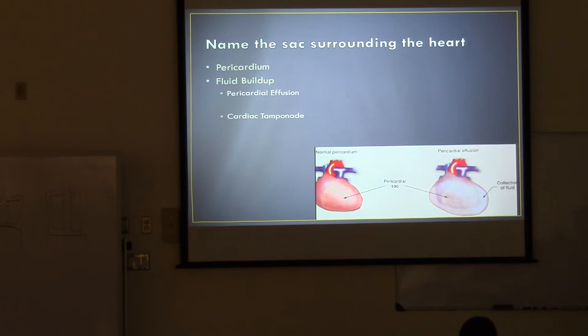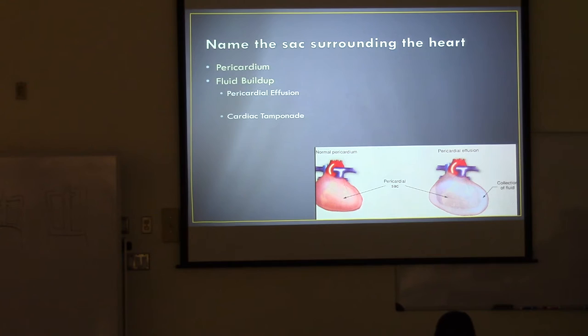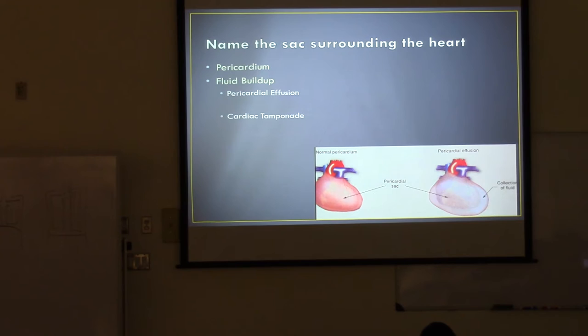Fluid pressing on the heart prevents adequate blood flow — that's cardiac tamponade. The pericardial effusion is referring to the fluid, and the fact that you have very low cardiac output or very low blood flow is the cardiac tamponade. So the prevention of normal blood flow is the cardiac tamponade, and the pericardial effusion is the fluid.